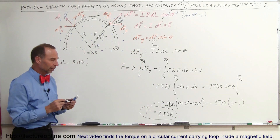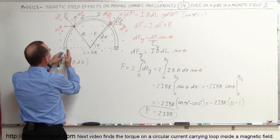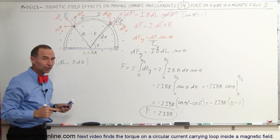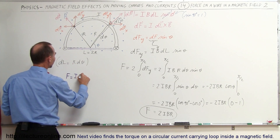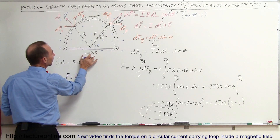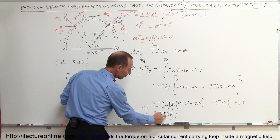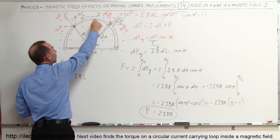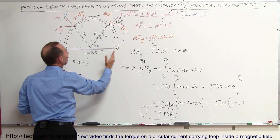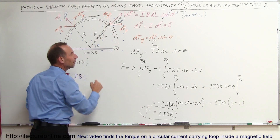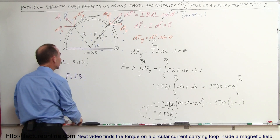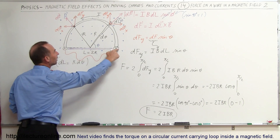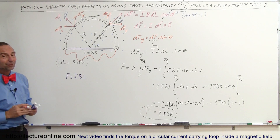Here's the interesting part: imagine we had a straight wire going from one end of the semicircle to the other, carrying the same current. The force on that straight wire would be F = I·B·L, and the length from one end to the other is exactly 2R — twice the radius. That matches our answer of 2iBR exactly. So the total force on the semicircular wire in the Y direction is exactly the same as the force on a straight wire connecting the two endpoints. In fact, this generalizes: any curved wire in a uniform B field has the same force as a straight wire connecting its two endpoints.